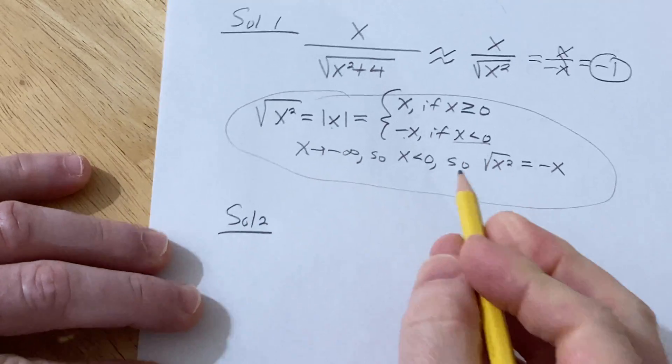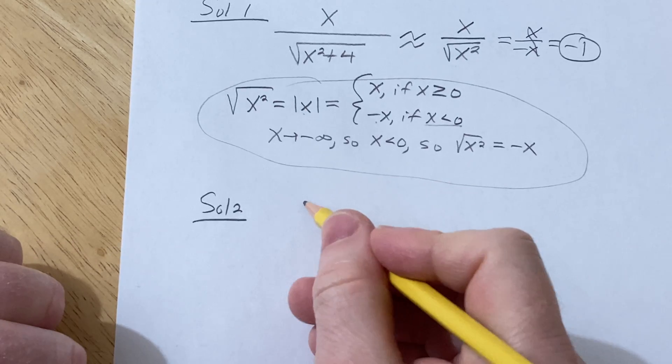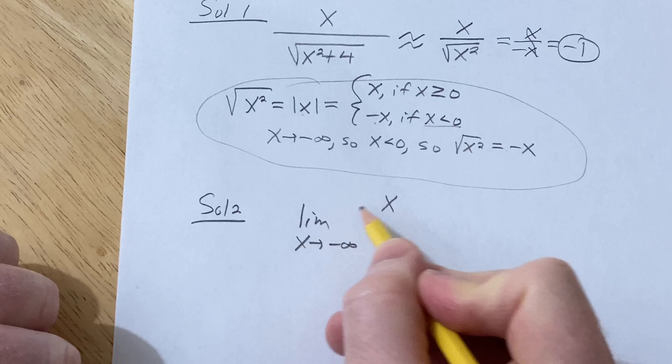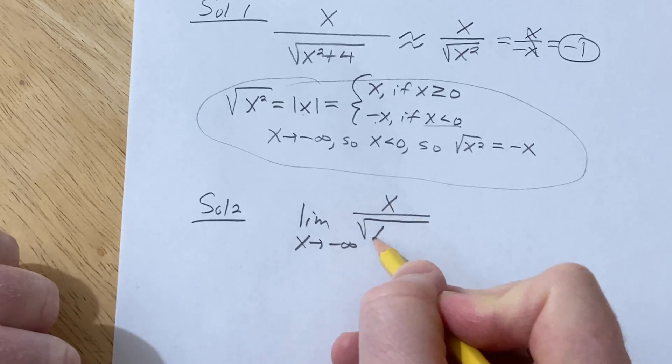Solution two. Perhaps a better way to do it, a better way to show work is the following. So we take the limit as x approaches negative infinity of x over the square root of x squared plus 4.